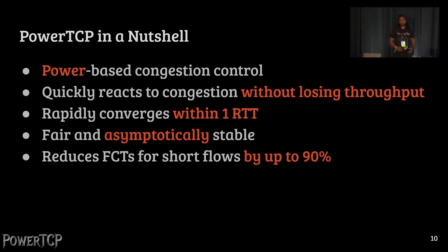In a nutshell, PowerTCP is a congestion control algorithm based on the notion of power. It quickly reacts to congestion without losing throughput. It rapidly converges within just one RTT. It is fair and asymptotically stable. Finally, PowerTCP reduces the flow completion times for short flows by up to 90%. But how do we measure power? What is it?